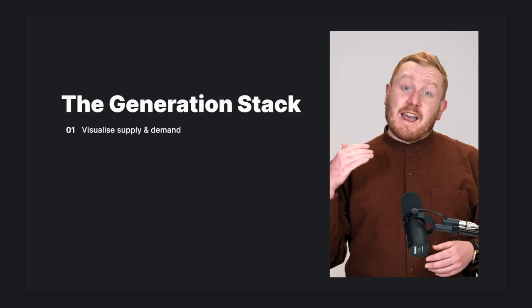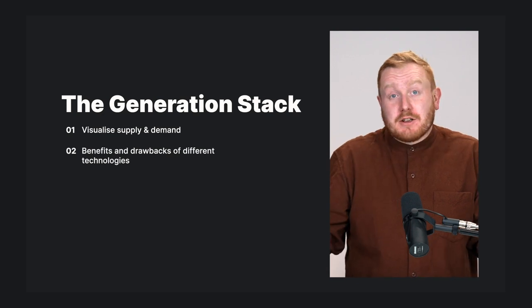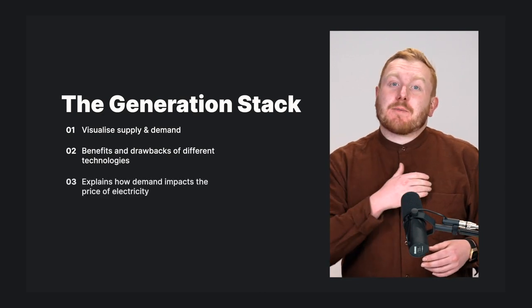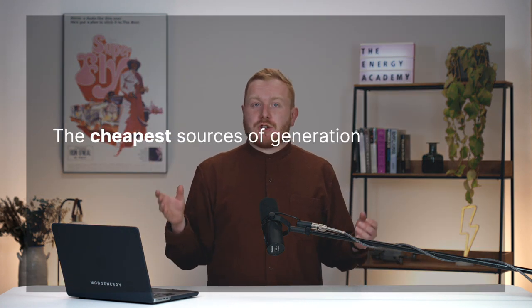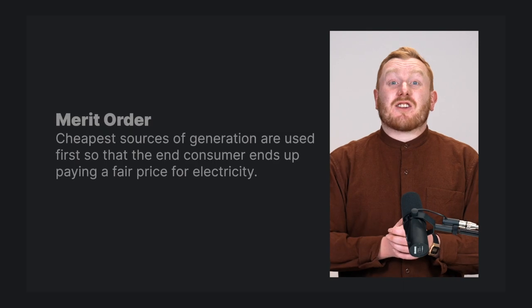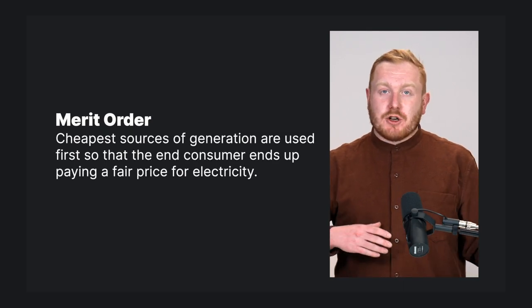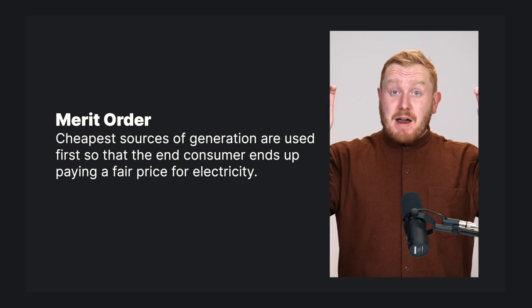Welcome back to the Energy Academy. In this episode I'll build a generation stack. The generation stack opens up a whole new way of thinking about electricity markets. It can help us visualize how we balance supply and demand, lets us weigh up the benefits and drawbacks of different technologies, and perhaps most importantly, it helps to explain how demand impacts the price of electricity. In essence, the idea of the generation stack is that the cheapest sources of generation are used first so that the end consumer ends up paying a fair price for electricity. This idea of prioritizing the dispatch of cheaper generators first is called the merit order.